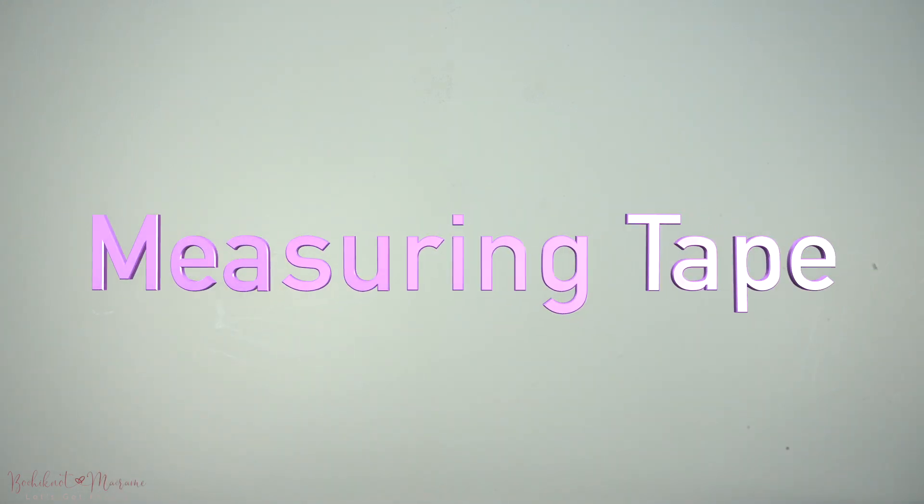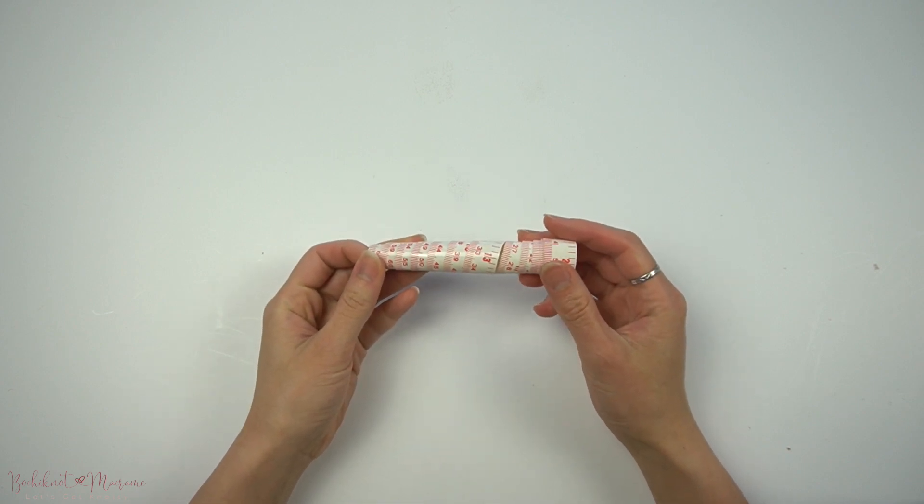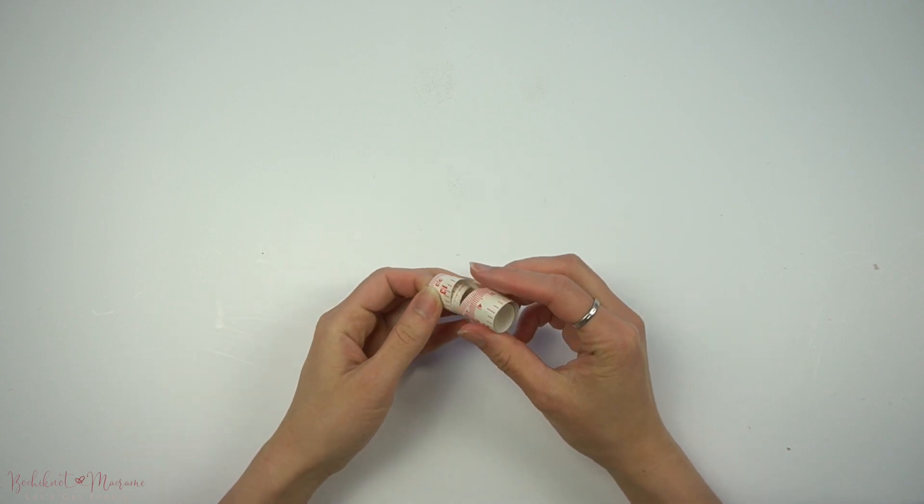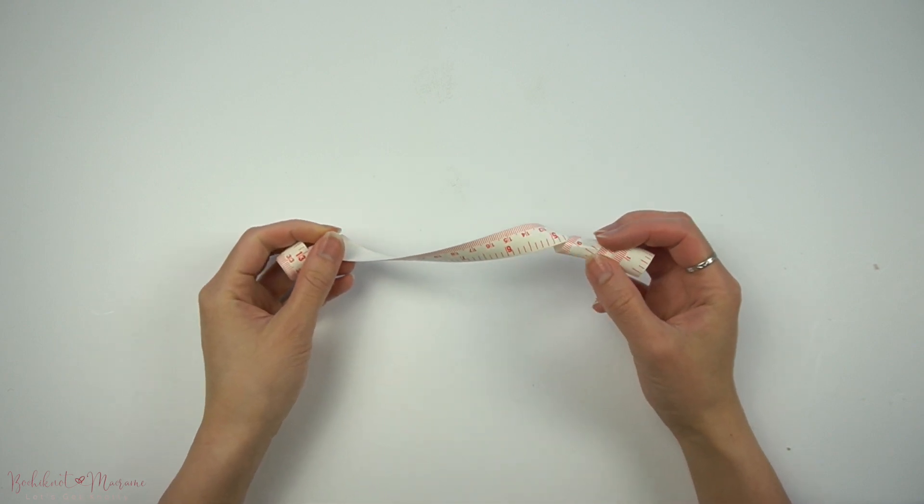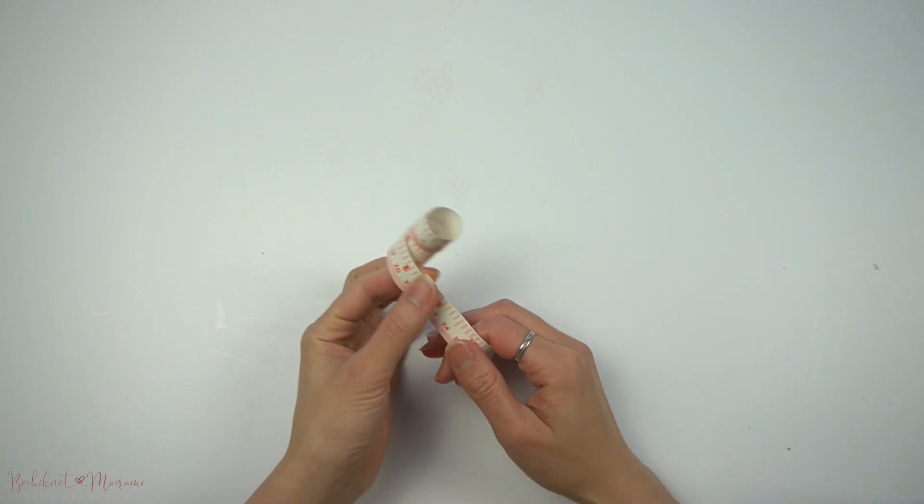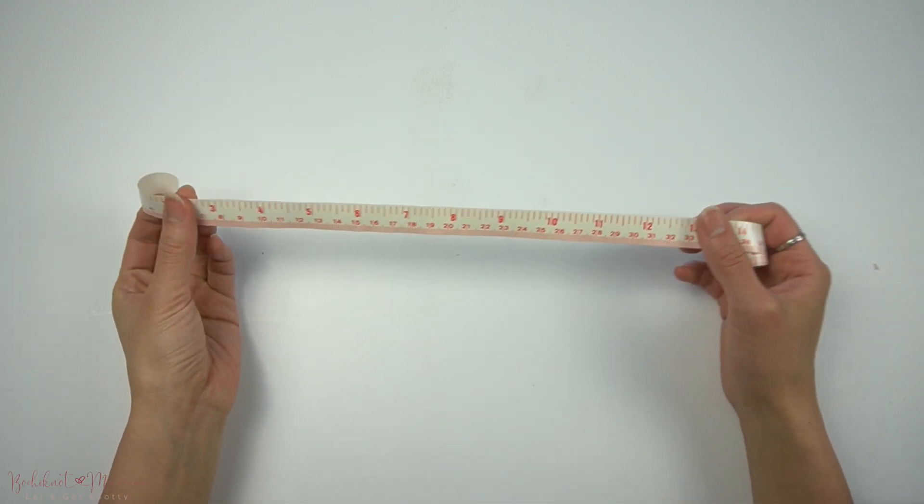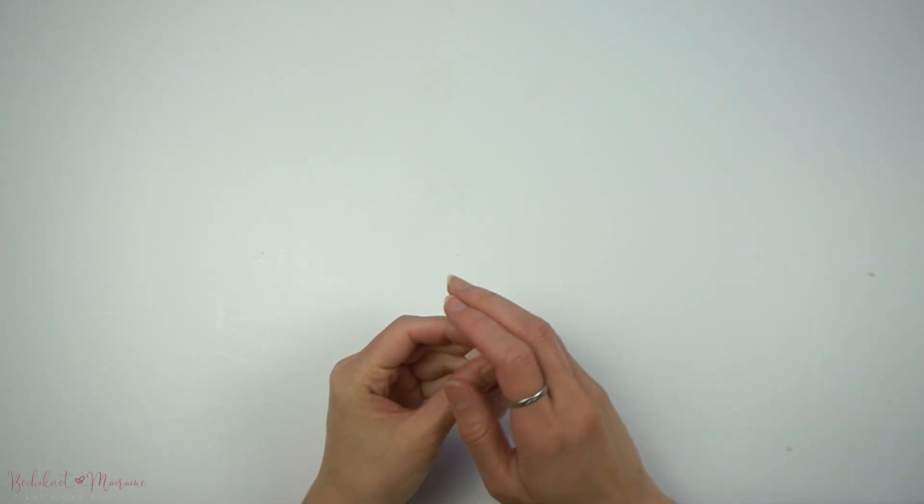The second very important tool is measuring tape. So this tool is very important to have when cutting and measuring strands of cord to use for your project. It is especially important as you'll need to measure out the recommended cord lengths from a tutorial or know how to measure your cord lengths if you're designing and creating your own pattern.